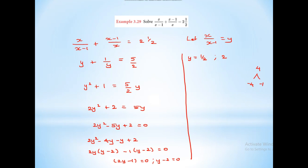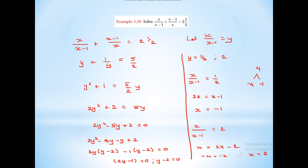First, y equal to 1 by 2. Since y equals x divided by (x minus 1), we get x equal to (x minus 1) divided by 2, so 2x equal to x minus 1, giving minus x equal to minus 1, but we can also get x equal to 2. Therefore the example sums are over. See you soon with the next video.